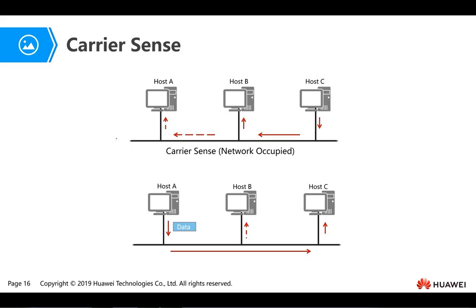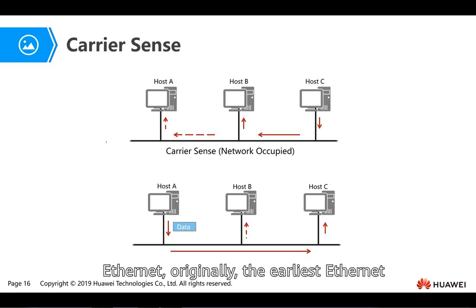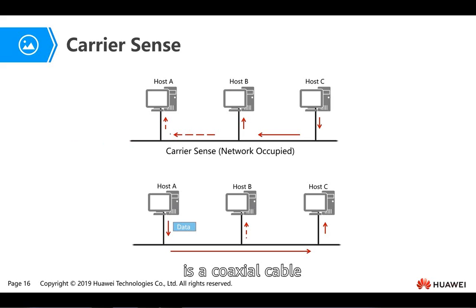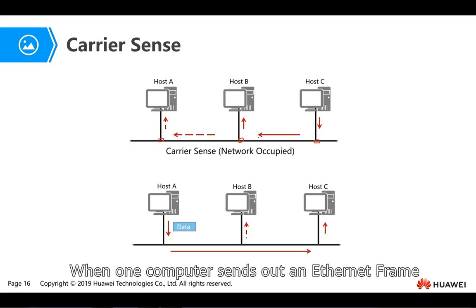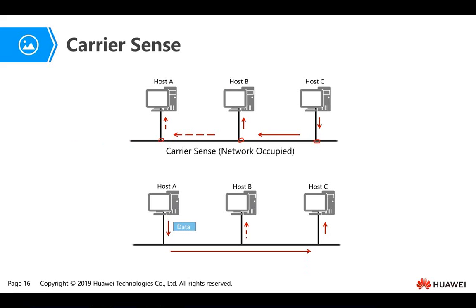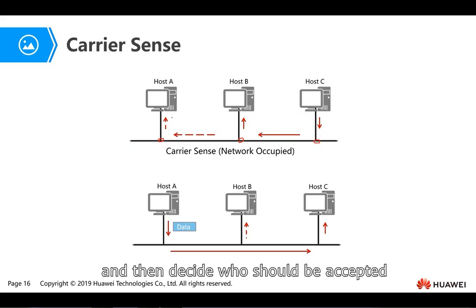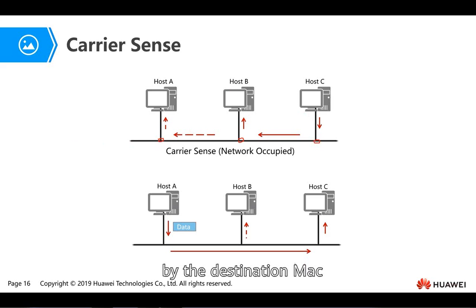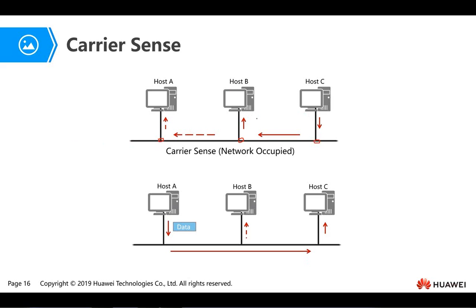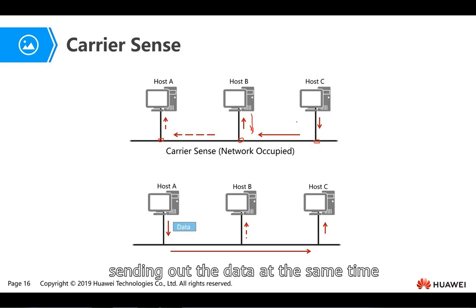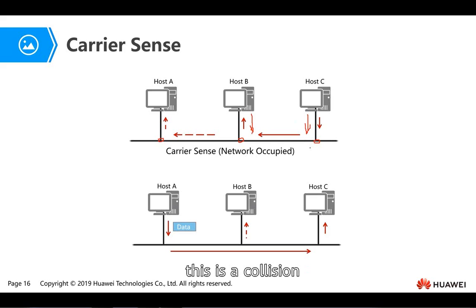Originally, the earliest Ethernet used coaxial cable, and all computers were connected to this coaxial cable. That means when one computer sends out an Ethernet frame, all others will receive it. All others receive it, then decide who should accept it by the destination MAC. There is a problem: if two computers send out data at the same time, that is a collision.